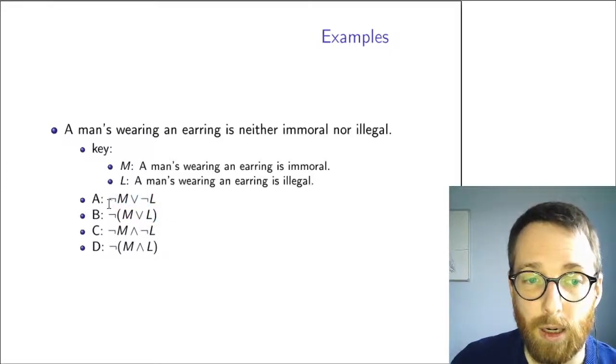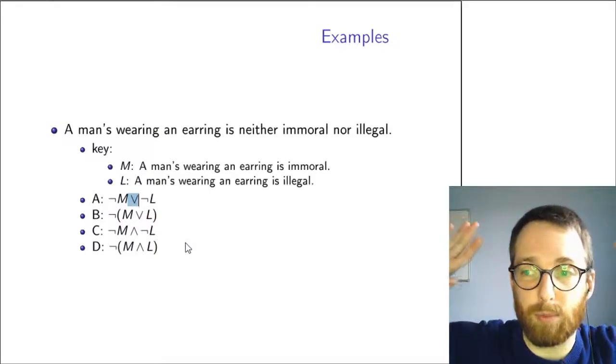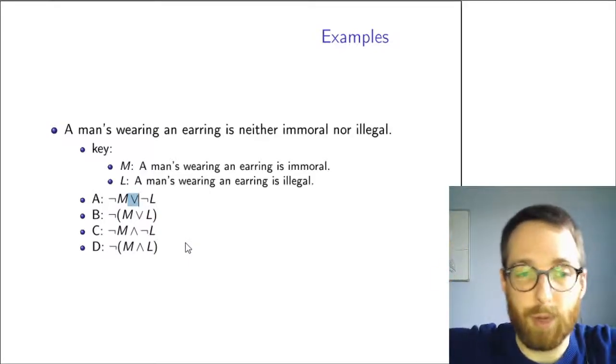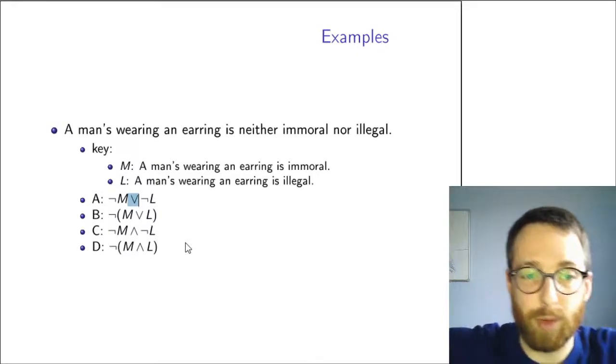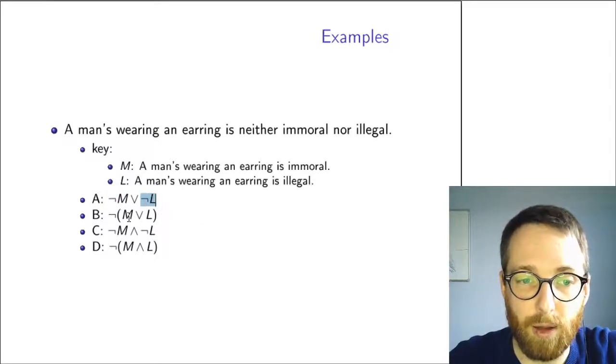Notice the difference between what the brackets do. This one says the things on either side of me, either thing on the left or the thing on the right. Thing on the left is not M, the thing on the right is not L. So that negation over there, that first negation, just applies to the M. This one just applies to the L. On the other hand, this one, the negation applies to the whole thing that comes after it.